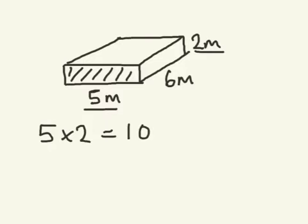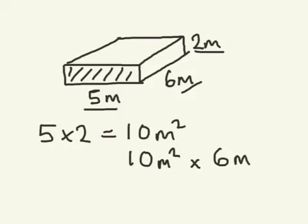And the units for area, because it's just the area of the front face, in this case is meters squared. Once I have the area of the front face, I then multiply this by how far the cuboid stretches back, which is 6 meters. So I then do 10 meters squared multiplied by 6 meters, which gives me an answer of 60 meters cubed. And that's my final answer.